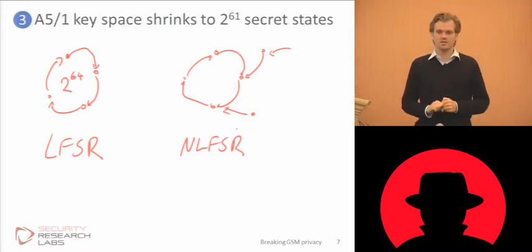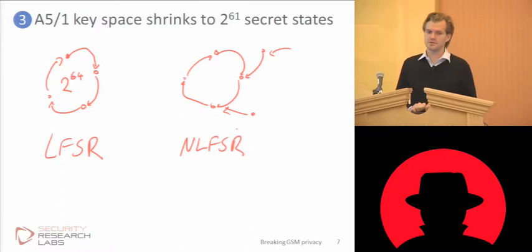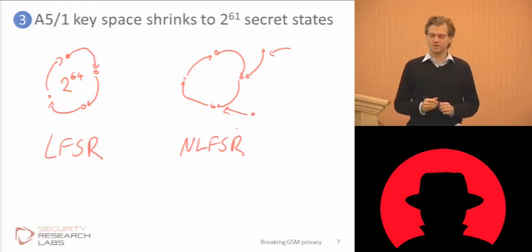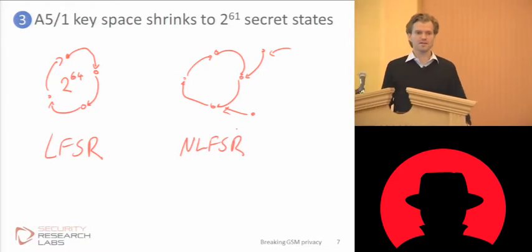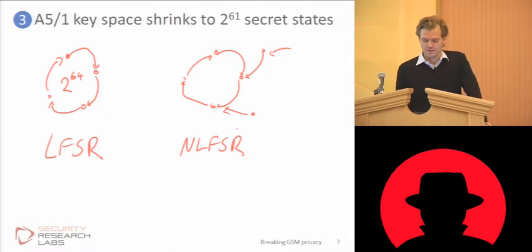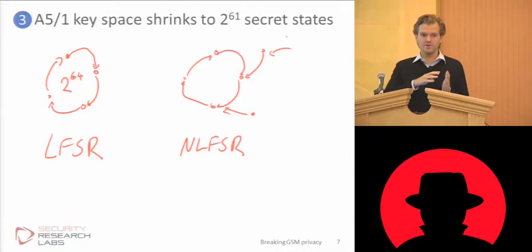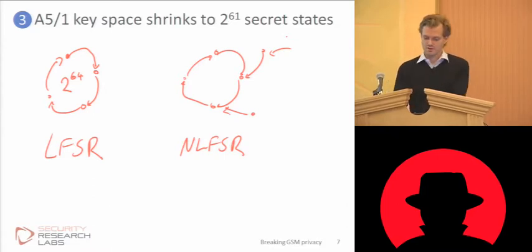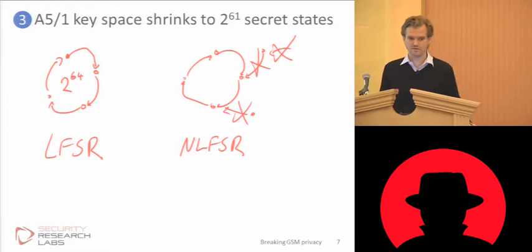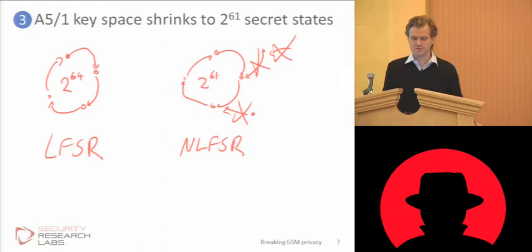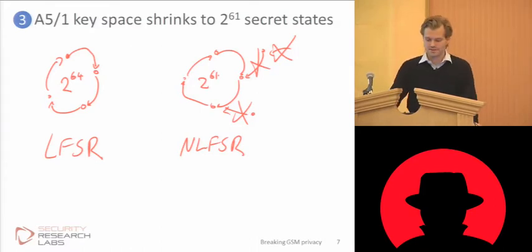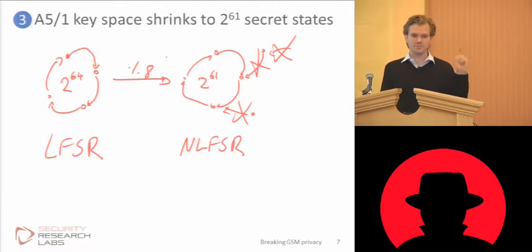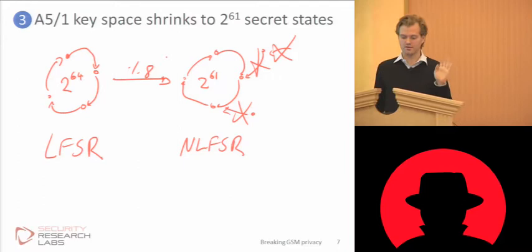Now, in GSM they do us a favor. They compute A5/1 a hundred times before using the first outputs of it. So you do the first hundred steps in this scheme before any attackable output is generated. Meaning every output that's up to a hundred steps away from the circle, but not actually on the circle, will never be used to generate a GSM output. All these extra states are irrelevant for breaking A5/1 in GSM, and the circle inside is only something like 2 to the 61 — that's an eight times improvement of both attack time and storage, meaning if you keep your storage constant you're improving by more than a factor of 30 your attack time.